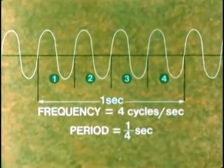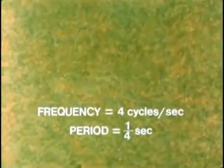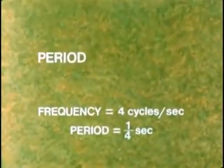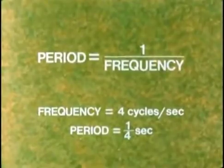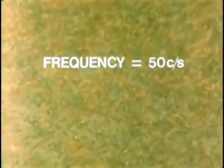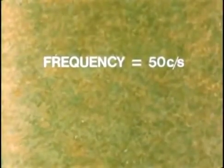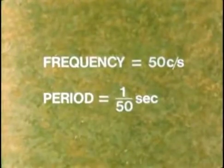And from this we can see a relationship between period and frequency. Period equals one over frequency. The 50 cycle AC of the British National Grid has a period of one-fiftieth of a second.